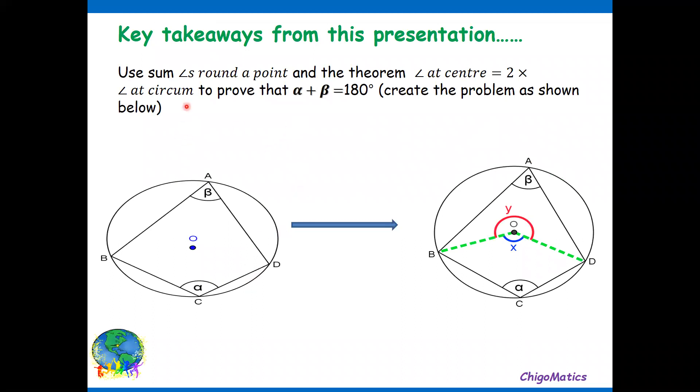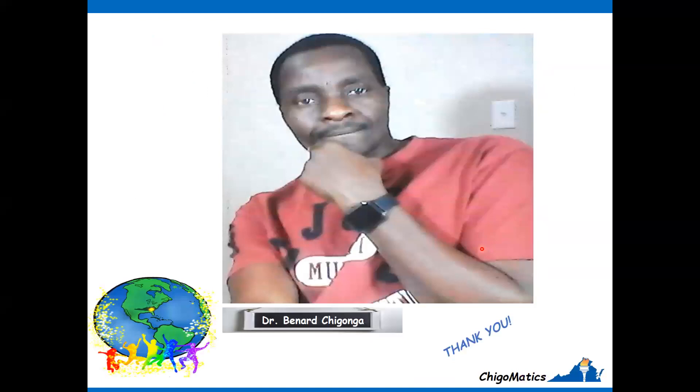Use the theorem angle at center equals twice the angle at circumference to prove that alpha plus beta equals 180. You created the problem as shown. This is what you are given, but then you create yourself to arrive at the end. I hope you get it right. I thank you.